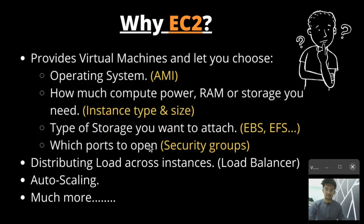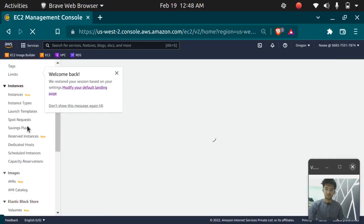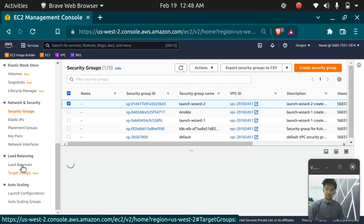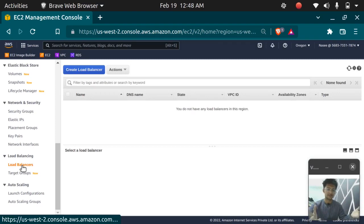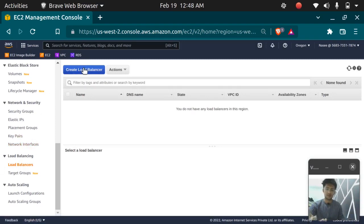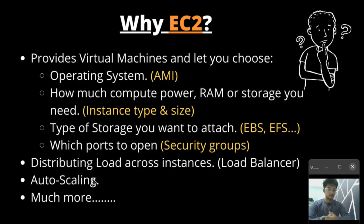You can also distribute load across instances using the load balancer option. You can distribute the traffic among different servers and different instances using load balancers. We will learn more about load balancers in further sessions. You can also use auto scaling groups to increase the number of instances whenever load is coming in, and decrease the number of instances when there is less traffic. These are the features of EC2.